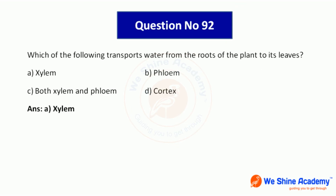Question number 92: Which of the following transports water from the roots of the plant to its leaves? Water transportation in plants occurs through xylem. Xylem transports water and minerals from roots to leaves. Answer option A, xylem.